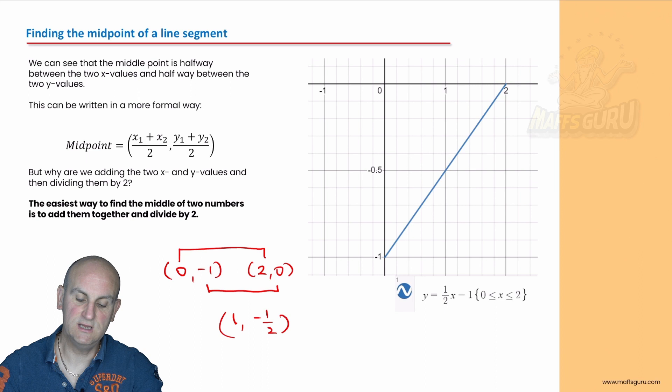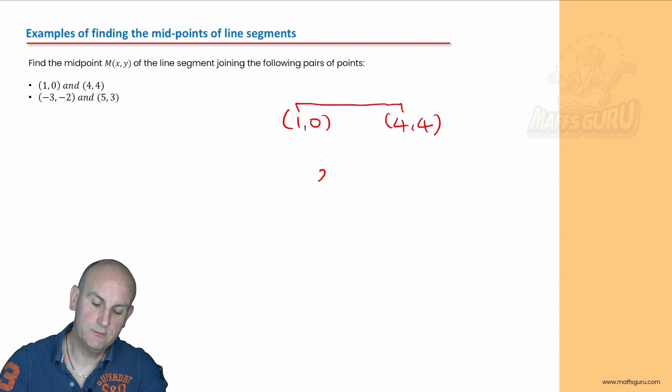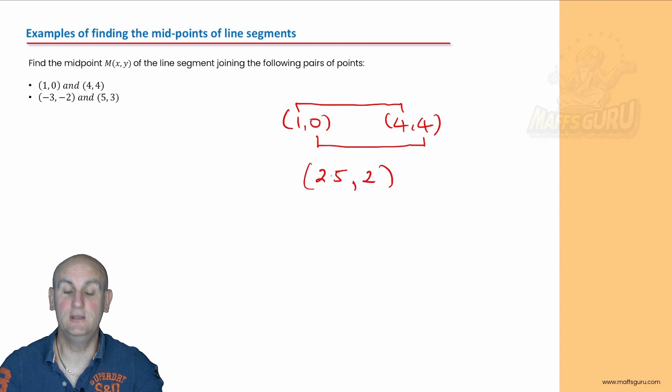Here's another example: (1, 0) and (4, 4). For the x values: 1 and 4, add them to get 5, divided by 2 is 2.5. For the y values: 0 and 4, add them to get 4, divide by 2 is 2. So the midpoint is (2.5, 2).